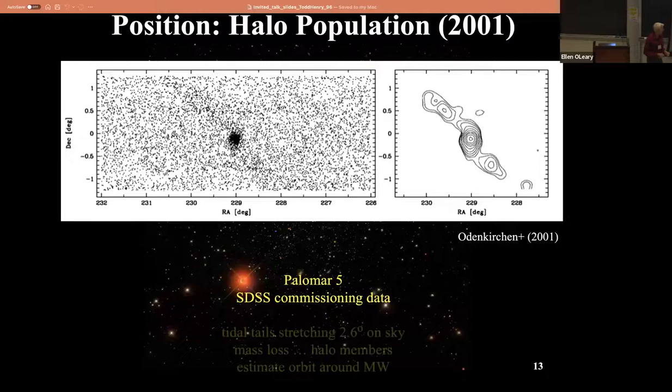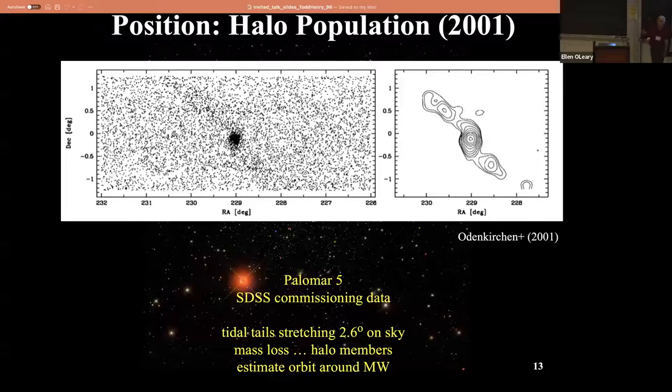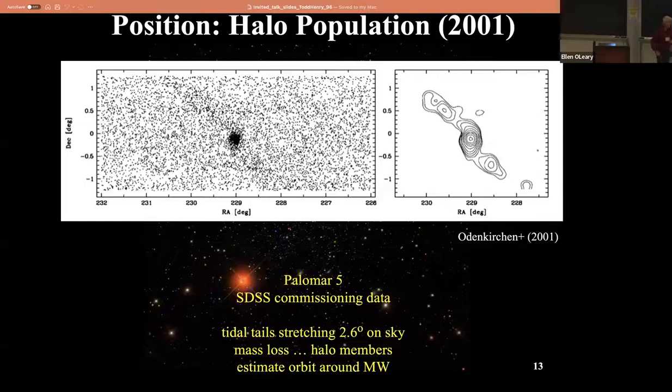You can then derive, with some more fancy math, that there's mass loss going on - these are stars that will become halo members in the future. You can start to put together an orbit of this globular cluster around the Milky Way because of the tidal tails that have been caused. Again, it's done astrometrically just using positions. You don't need any distances for this - just assume all those dots are up there in the sky in some location.